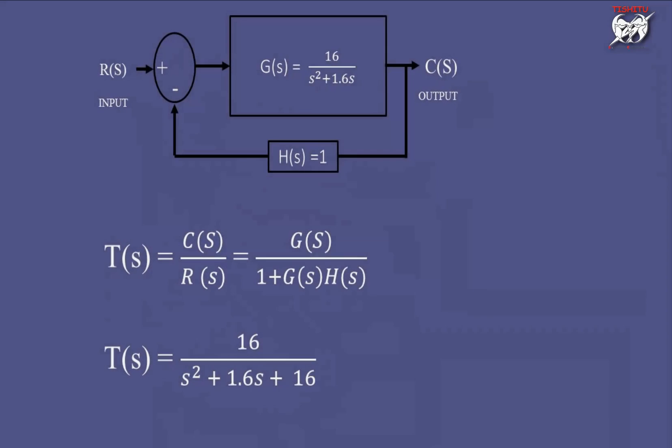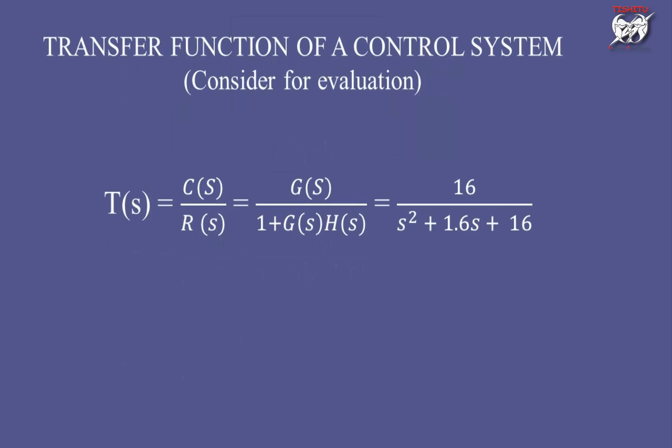As we already discussed, transfer function is represented by ratio of output upon input. And there is a standard formula to evaluate transfer function, that is G(s) upon 1 plus G(s)H(s) for negative feedback. By simply putting values of G(s) and H(s), we get transfer function 16 upon s squared plus 1.6s plus 16. So now we have a mathematical equation of transfer function of a system considered for further evaluation.